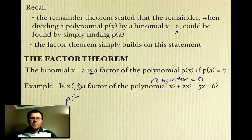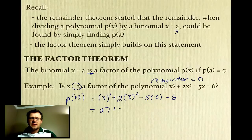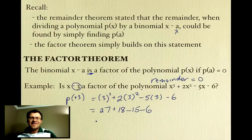So we're going to find P of positive 3. That's 3 cubed plus 2 times 3 squared minus 5 times 3 minus 6. 3 cubed is 27. We've got 2 times 3 squared, which is 2 times 9, that's 18, minus 15, minus 6. I can see right away that 27 and 18 are both bigger than 15 and 6, so this does not equal 0. That means x minus 3 is not a factor.